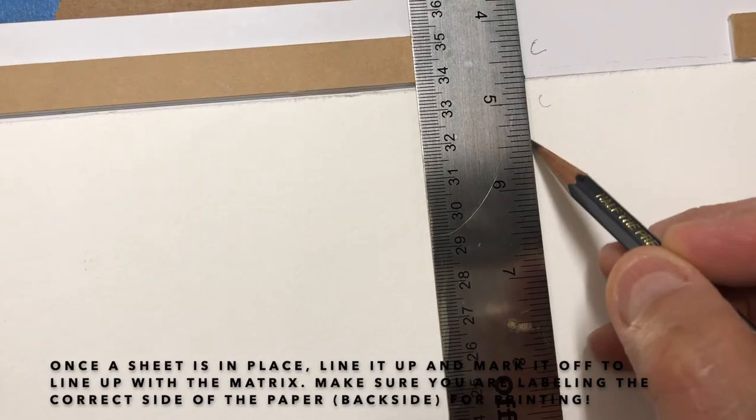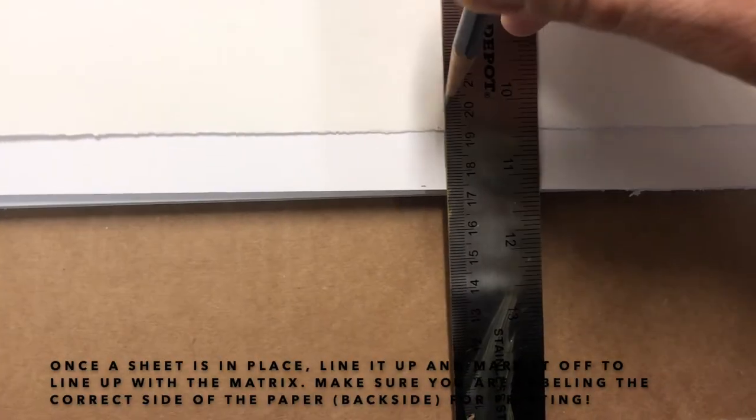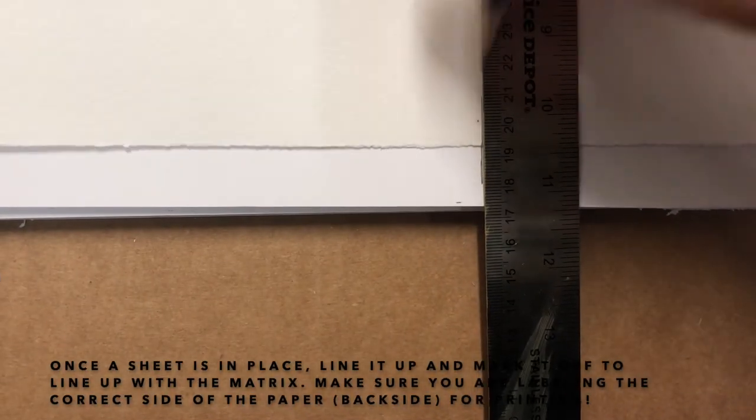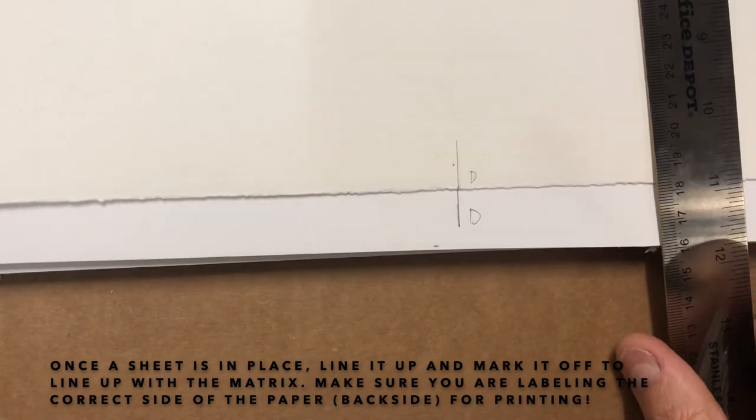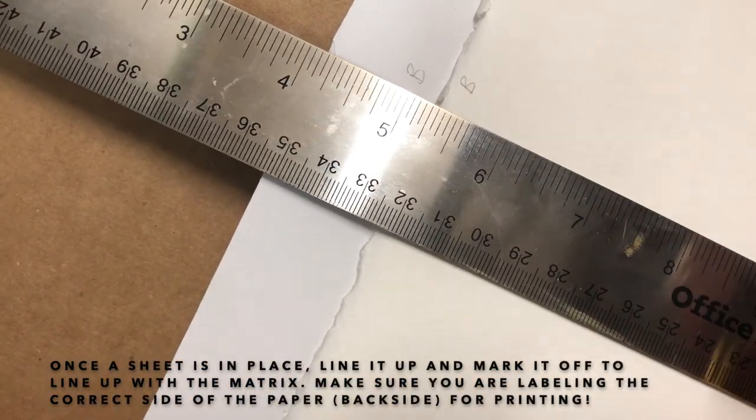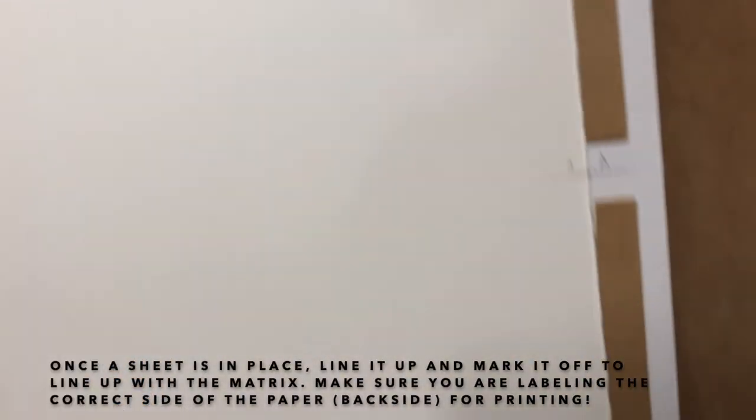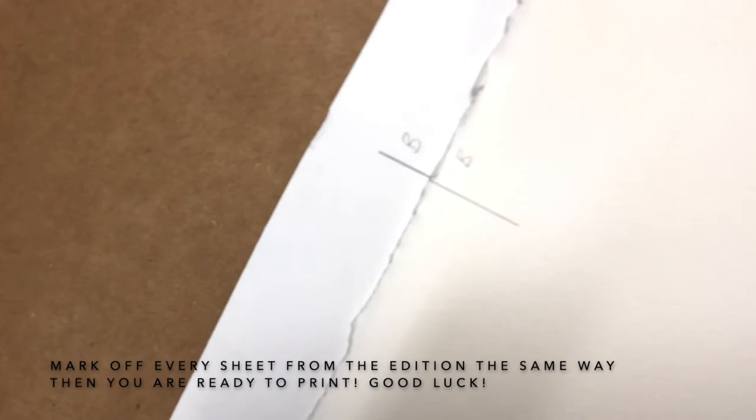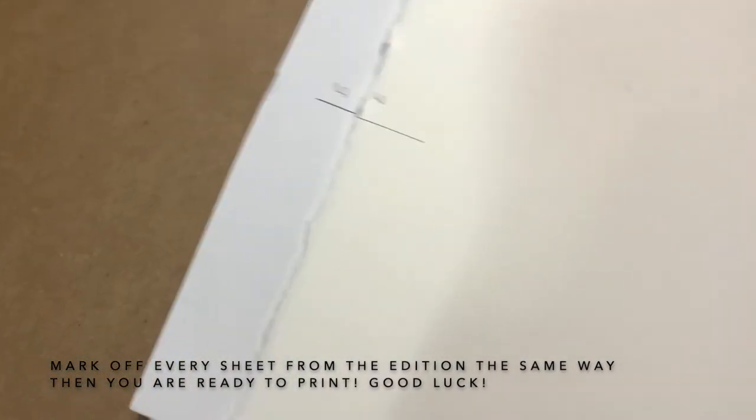I'm going to use my first editioning paper. Line every edge up, make sure that it's butted against that illustration board backer. That way when I line my paper back up for the editions, every image lines up perfectly. You want to repeat that for every sheet of paper in the edition.